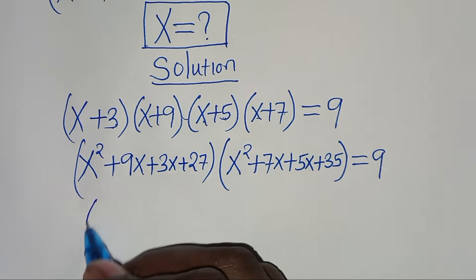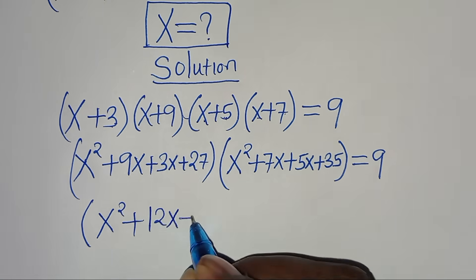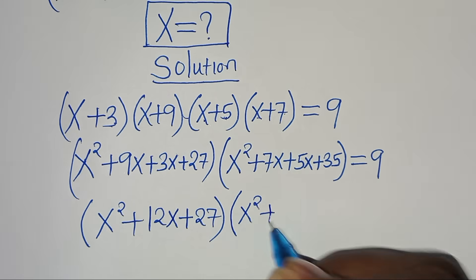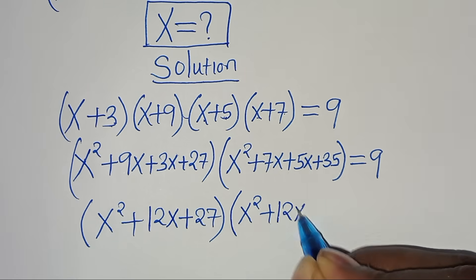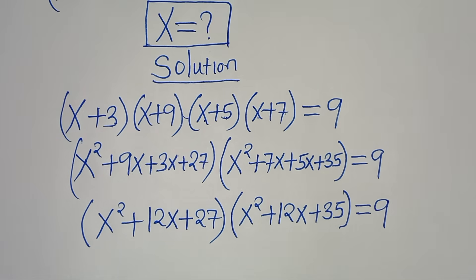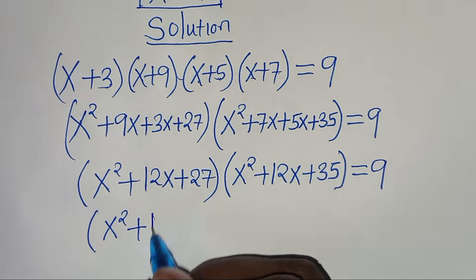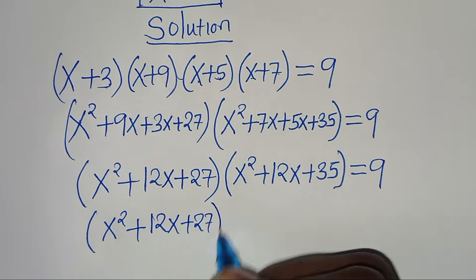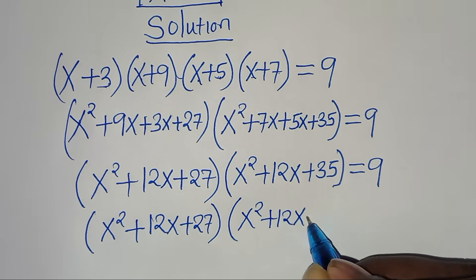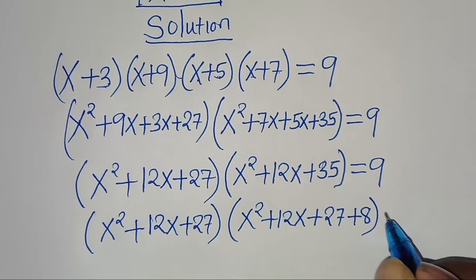Simplifying: the first bracket is x² + 12x + 27 and the second bracket is x² + 12x + 35. We can express 35 as 27 + 8, so the second bracket becomes x² + 12x + 27 + 8. This sets up a useful substitution since both expressions share x² + 12x + 27.